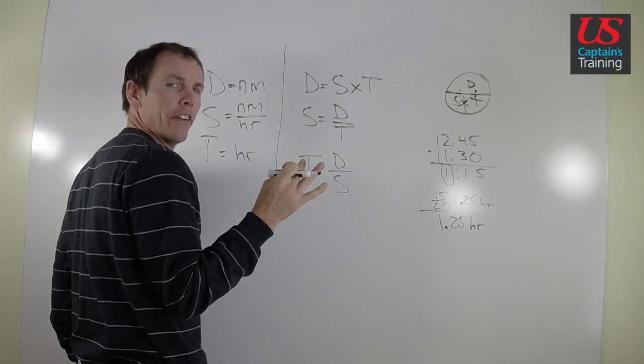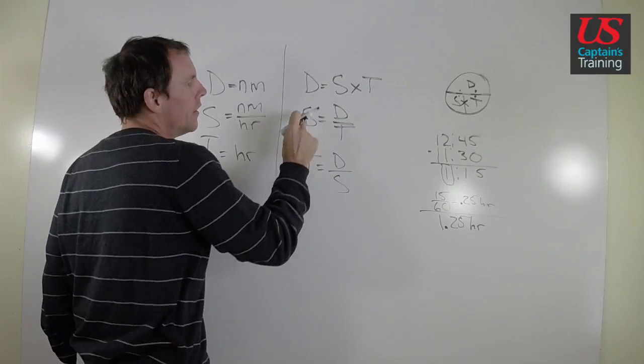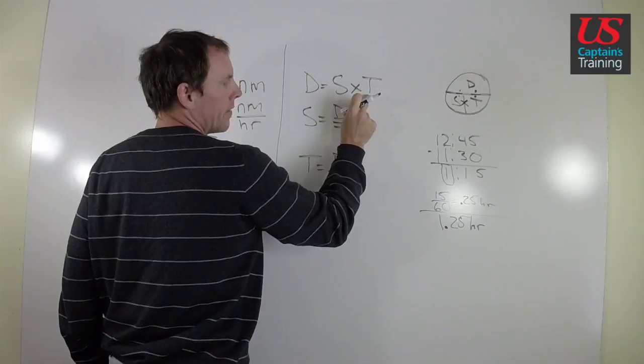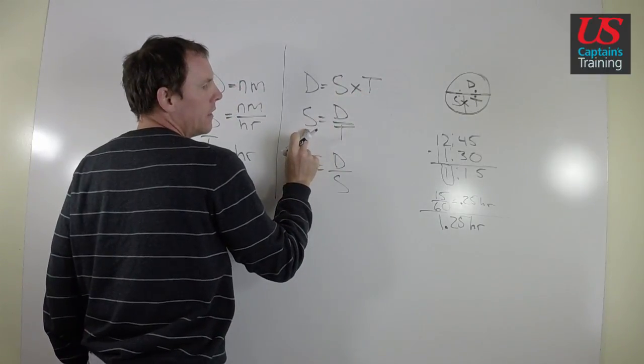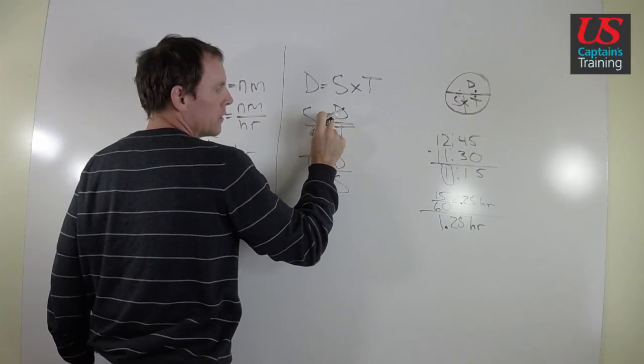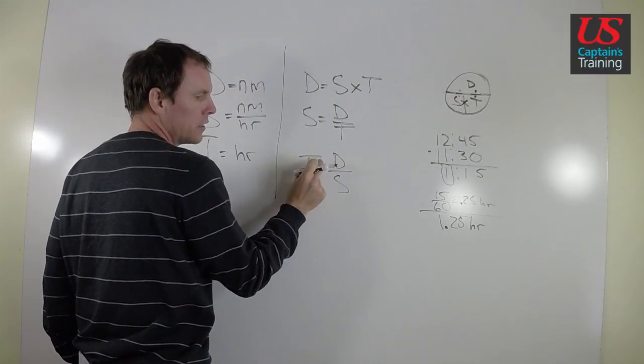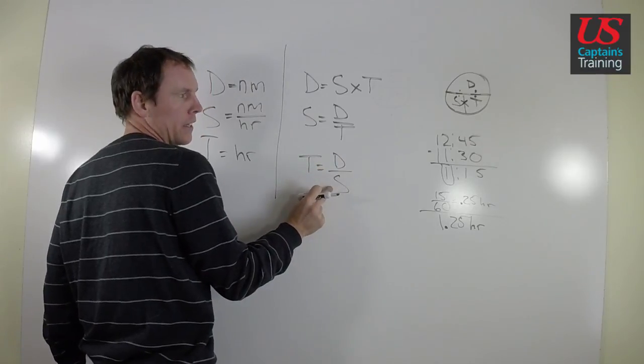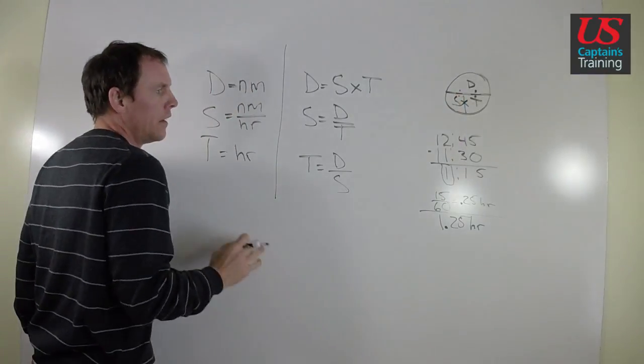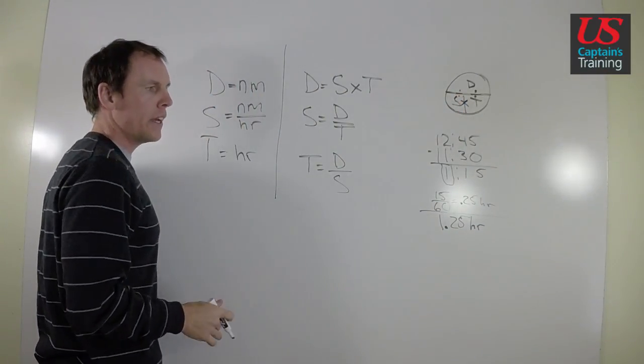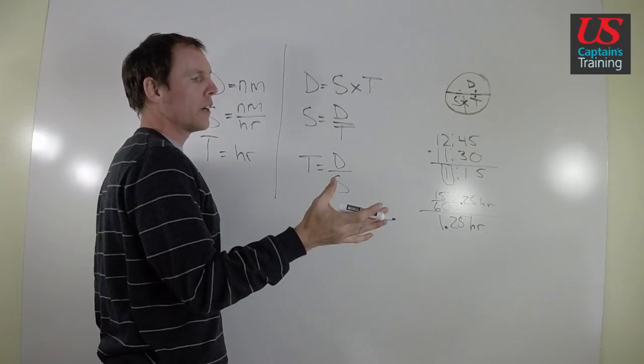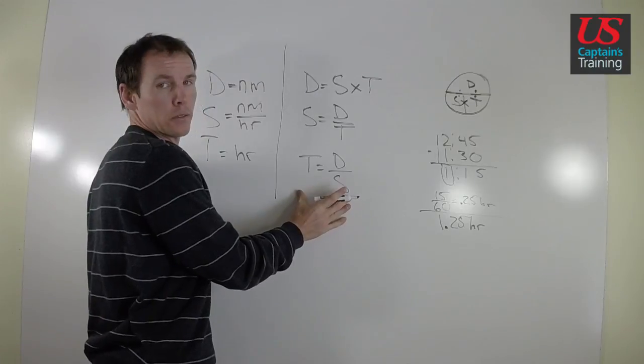If we have two of the three variables, we can always find the third. Distance is equal to speed times time. Speed is equal to distance divided by time. Time is equal to distance divided by speed. Use all of this in combination and you should be able to get through the ETA and the Speed Made Good problems and all the rest of the problems really use this distance, speed, and time stuff.